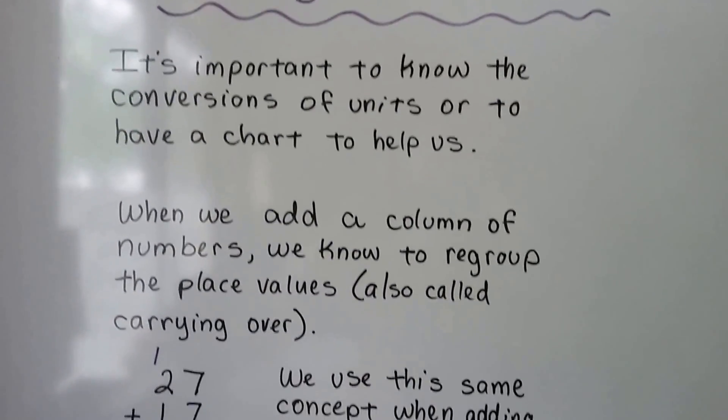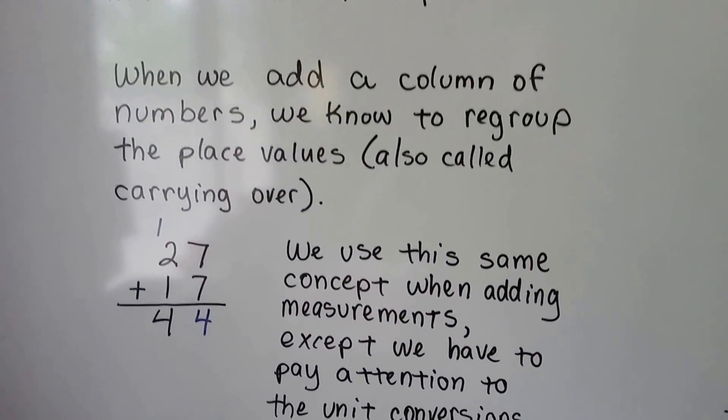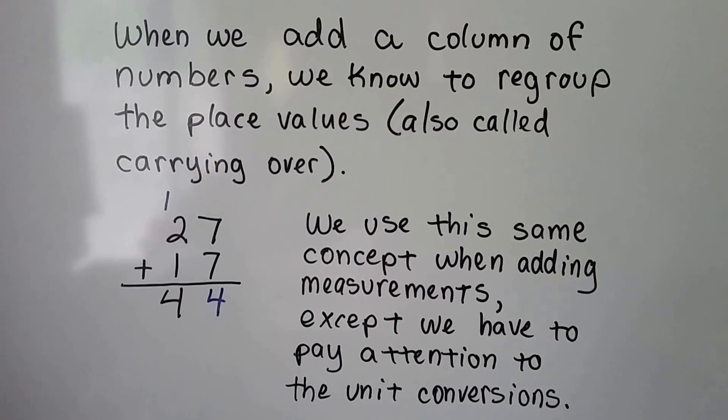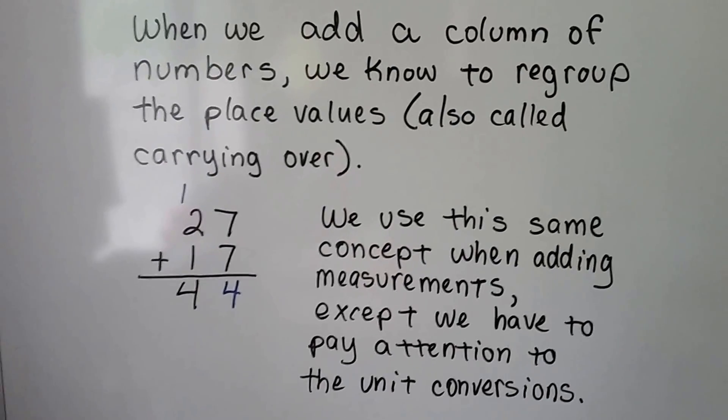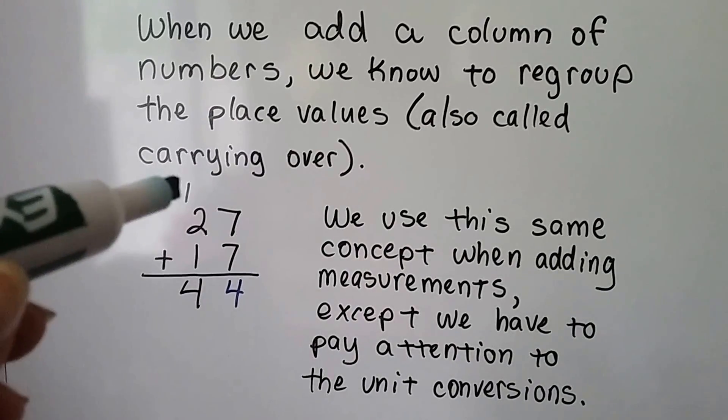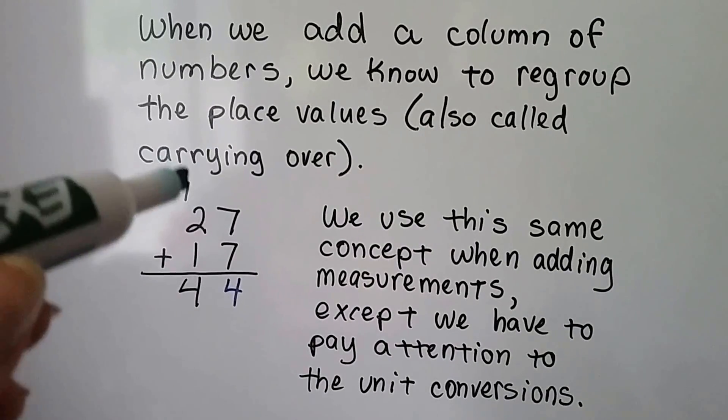When we add a column of numbers, we know to regroup the place values, also called carrying over. If we wanted to add 27 and 17, we know we need to carry this one over here to regroup it as a 10, because 7 plus 7 is 14.